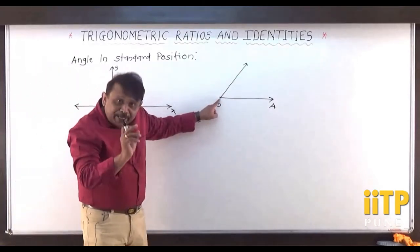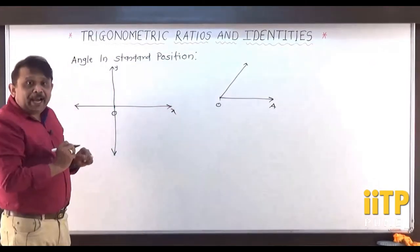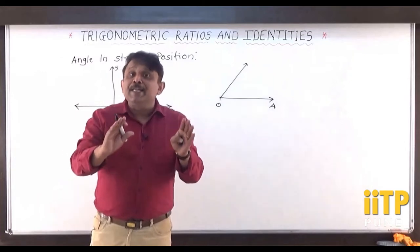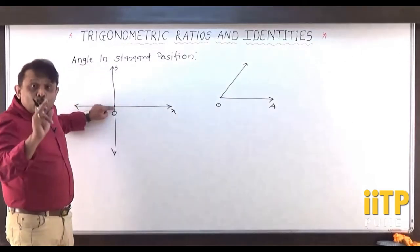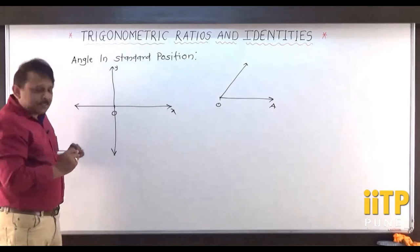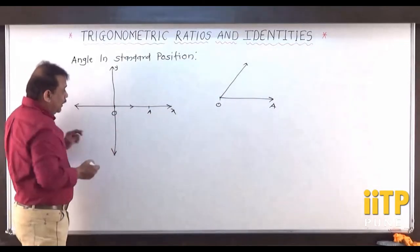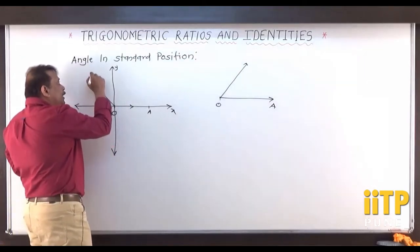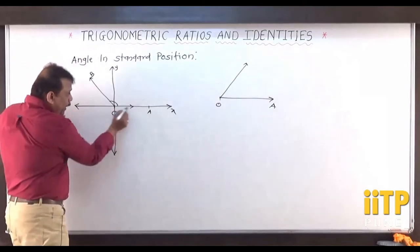The point O is called the vertex of the angle. If I keep the vertex at the origin and the initial ray along the positive x-axis, that angle is called an angle in standard position. An angle in standard position is one whose vertex is at the origin and whose initial ray is along the positive x-axis. Rotating from that initial ray gives the terminal ray OB, and the angle AOB is in standard position.